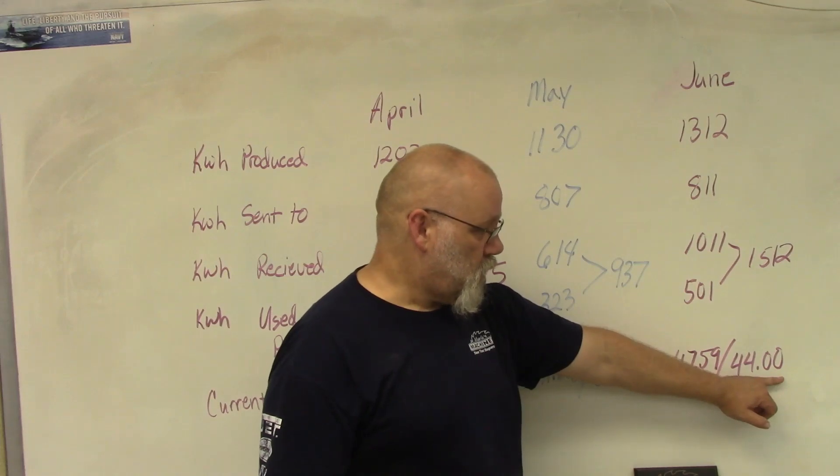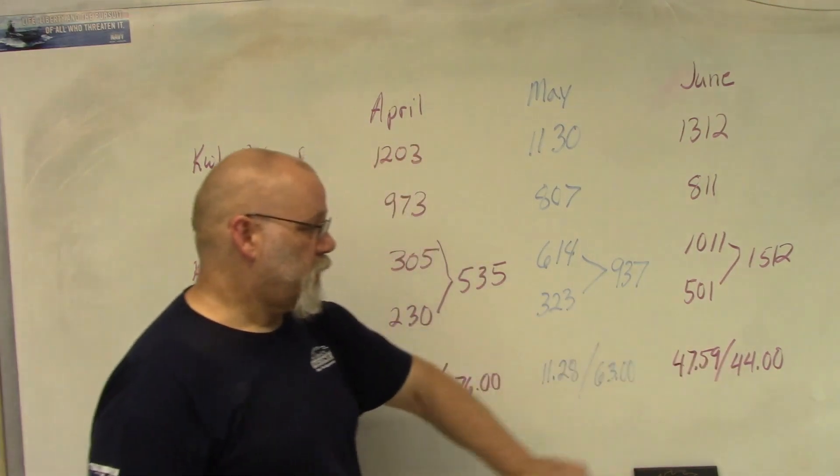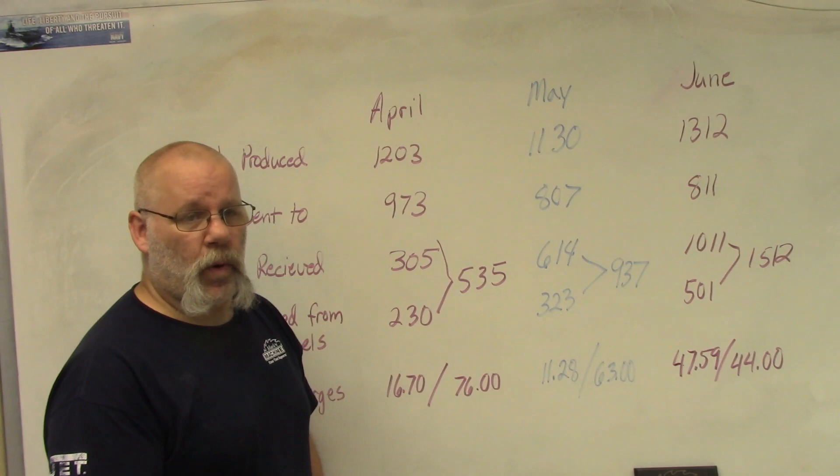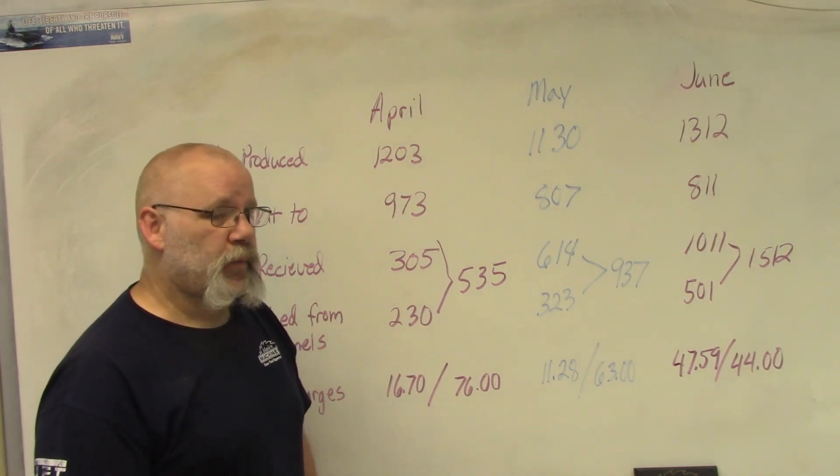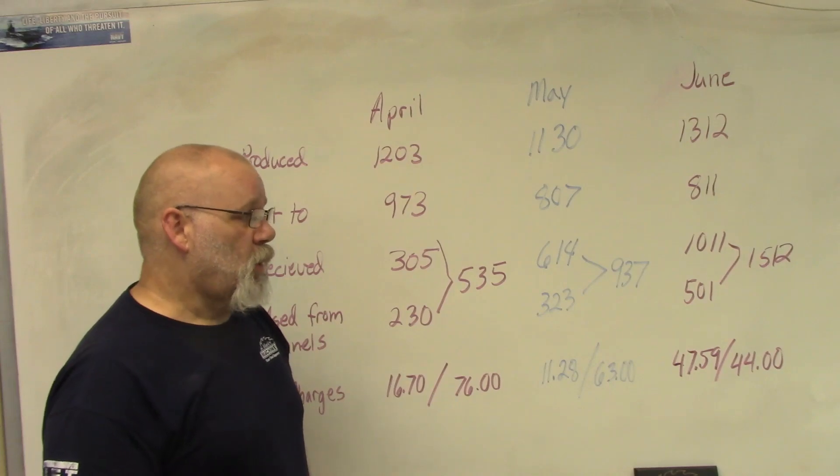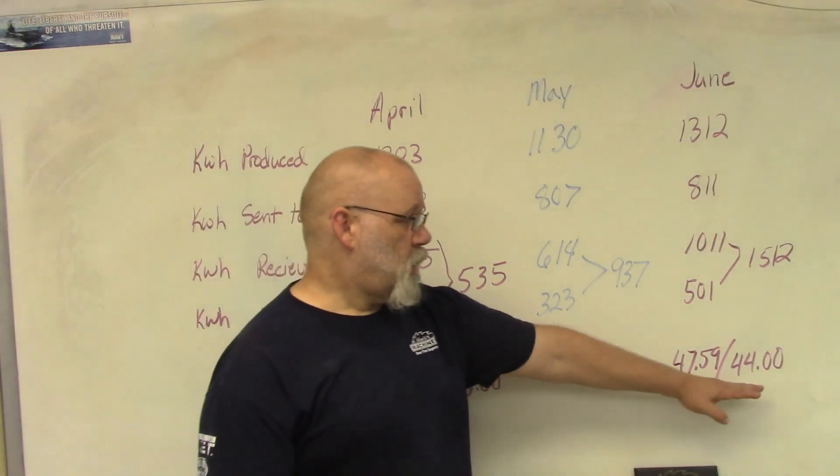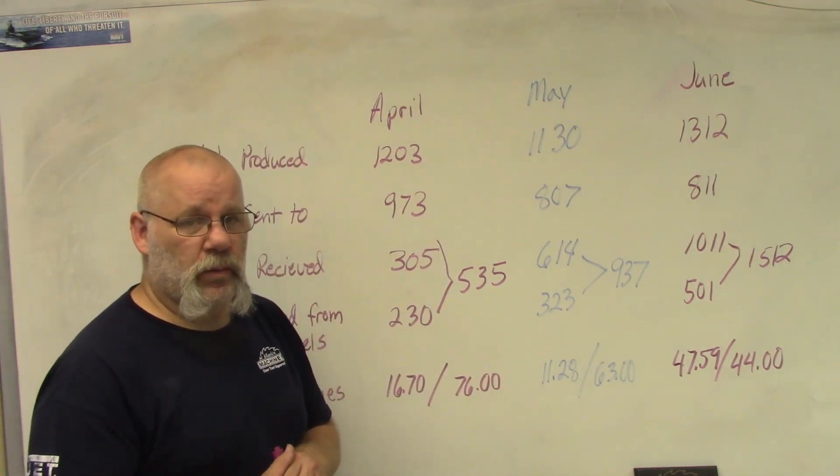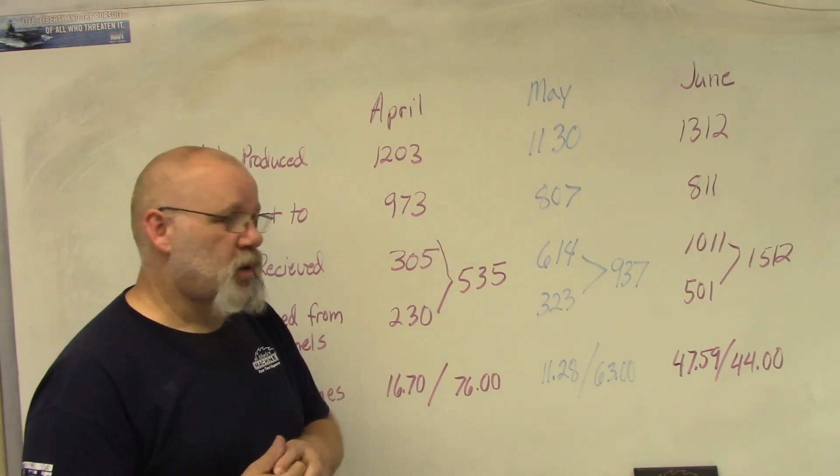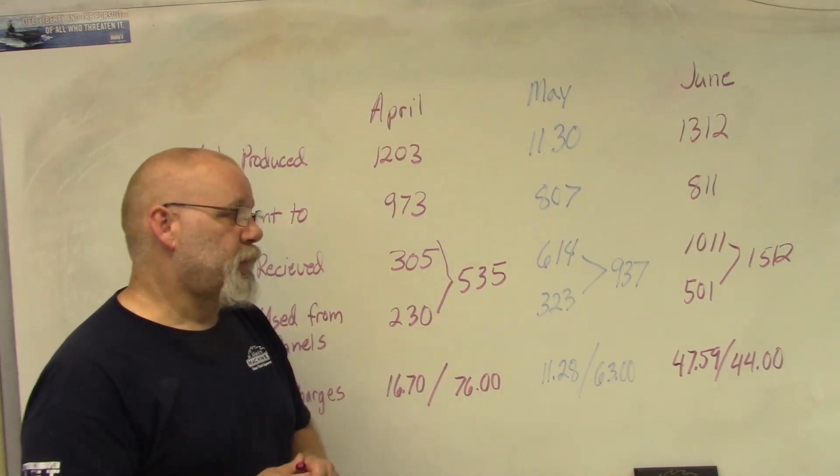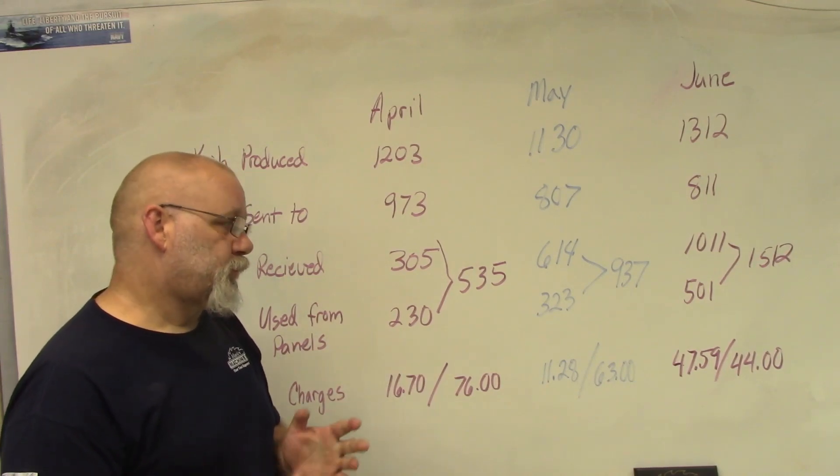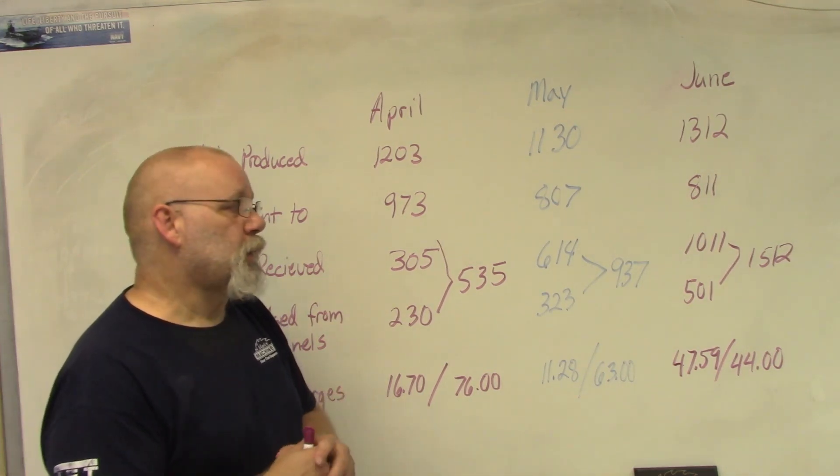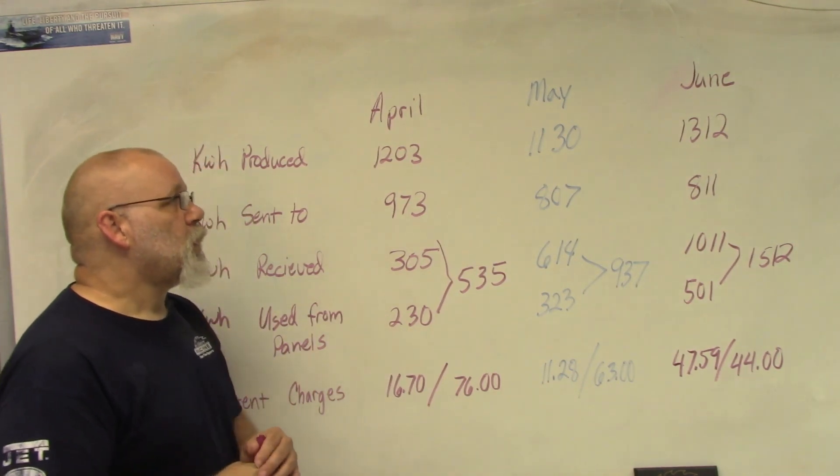We installed our solar panels in August, so we only have a partial month for August. But in September will be one full year on solar panels. So whatever number we have here in August will pretty much be our average solar panel or energy cost for the next 12 months. Where that settles, it'll probably settle someplace around $30 or $35, I'm thinking someplace in that ballpark.